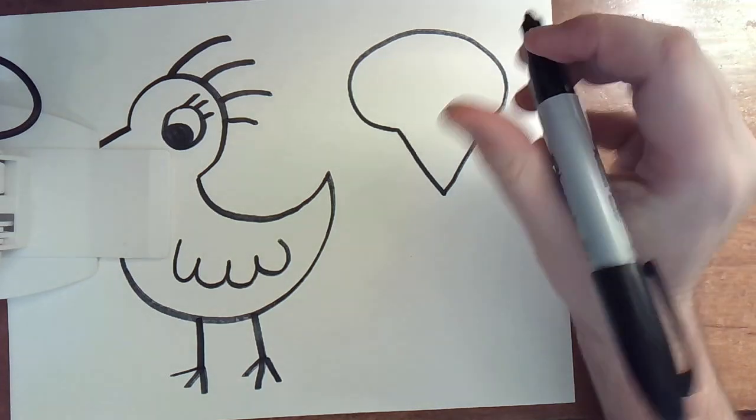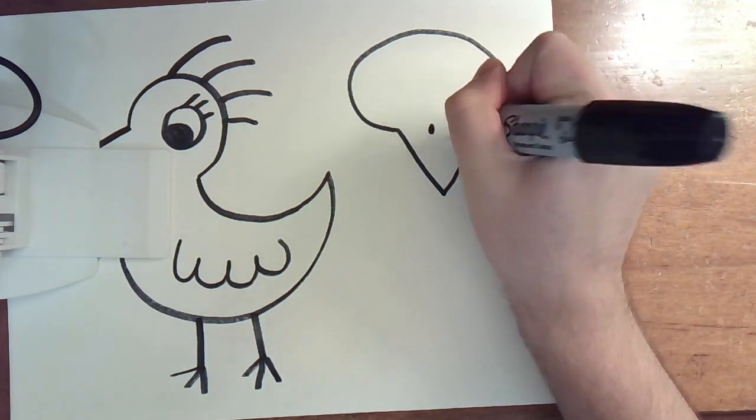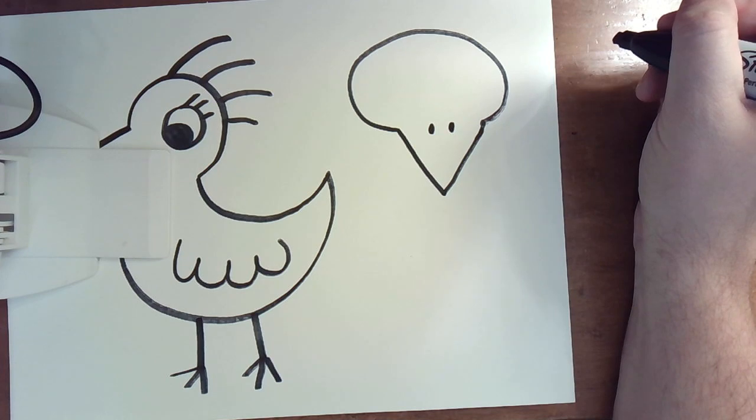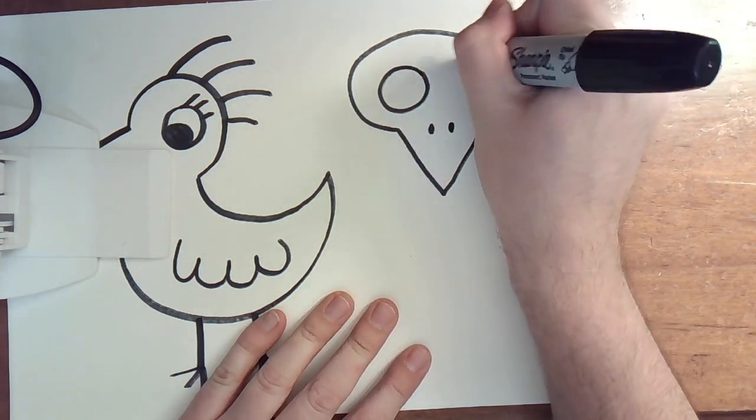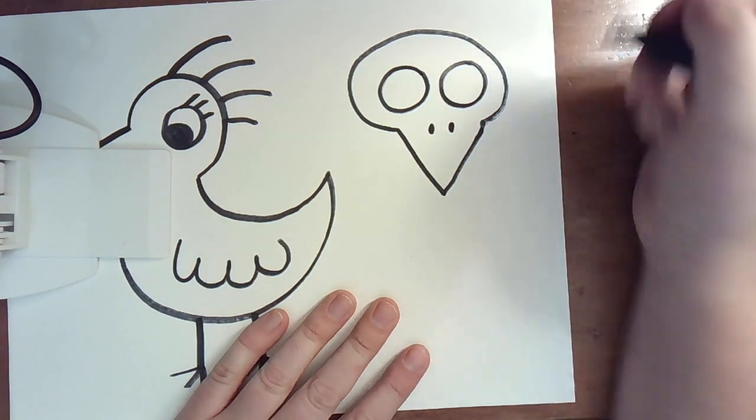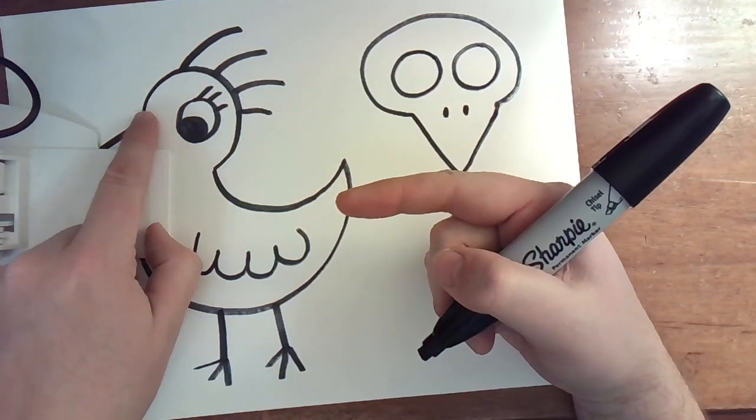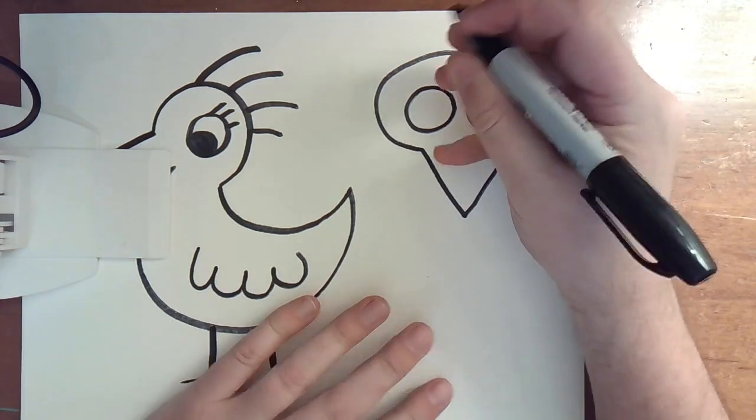When the bird looks at you, I give him two little nostrils. And for this we're going to do two eyes because when the bird was looking sideways the other eye is hidden behind the head. When the bird's looking at you, you can see both.